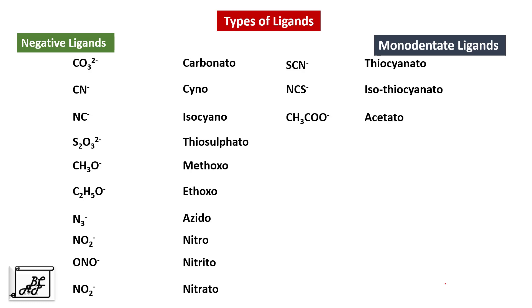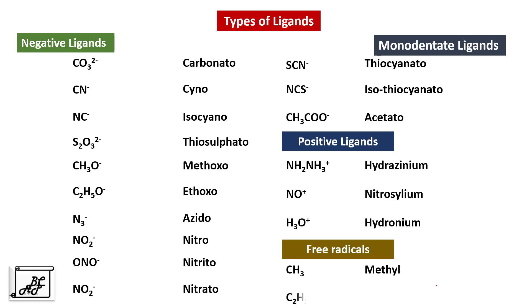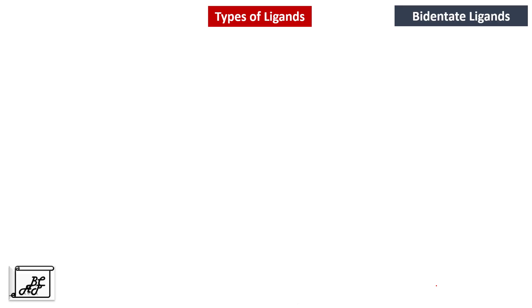After neutral and negative ligands, the next category is positive ligands. There are very few positive ligands, such as hydroxenium ion, nitrocyllium, and hydronium. There could also be some free radicals like methyl, ethyl, and so on. These are all examples of monodentate ligands — they can be neutral, negatively charged, positively charged, or free radicals.